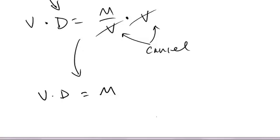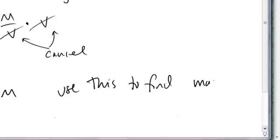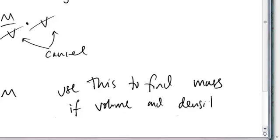Now, why would we want this? Right. So you're going to use this to find mass if the volume of an object and the density of that object is known or are known.